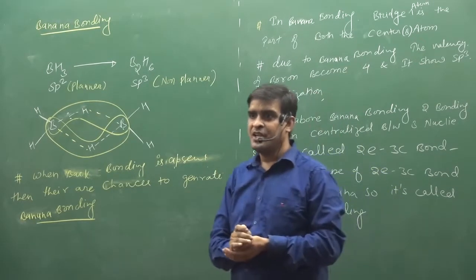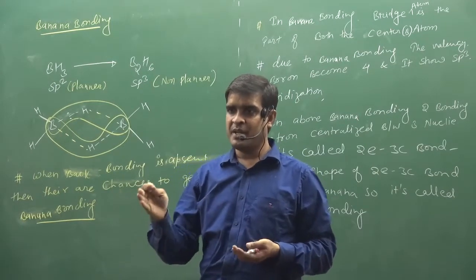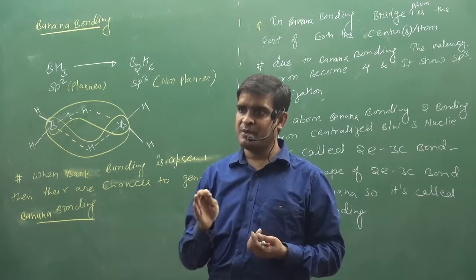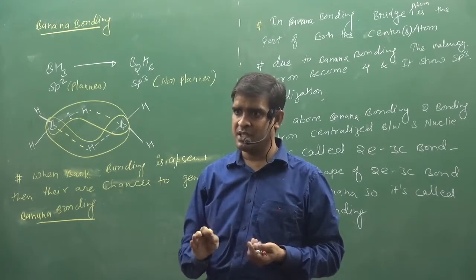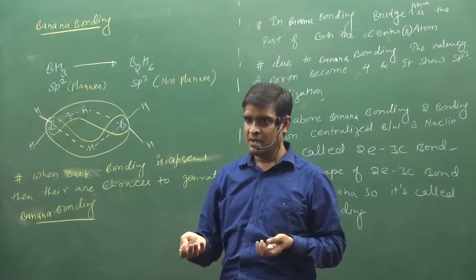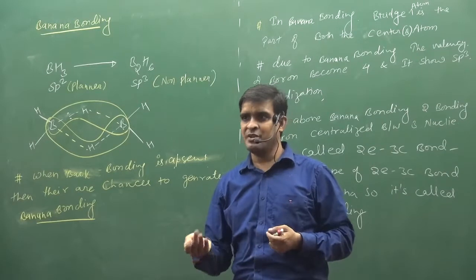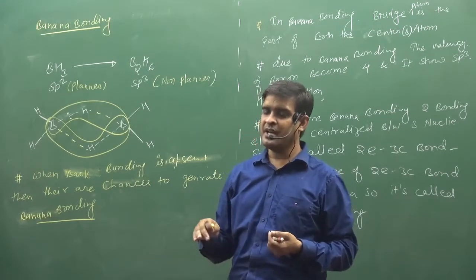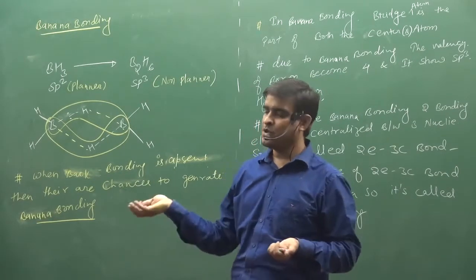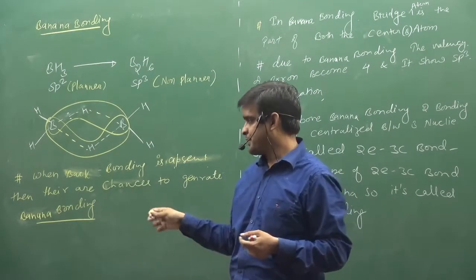It means: what will happen with back bonding priority? Banana bonding will be more. Back bonding priority - banana bonding will be more. If you have a chance to get it, then you will select back bonding first. For back bonding, one must have an empty orbital and one must have a lone pair. So what would happen is the chance to do banana bonding. This is banana bonding.